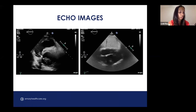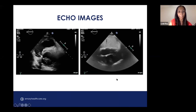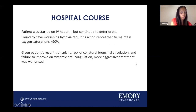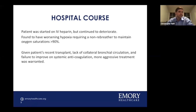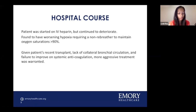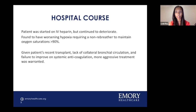He had a CTPA performed confirming an extensive pulmonary embolus burden within the bilateral distal PAs, extending into multiple lobar branches involving all lobes, and completely obstructive in the left lung. Echo done almost immediately showed an enlarged RV with decreased function. Weight-based heparin was initiated; however, the patient became increasingly hypoxic, requiring a non-rebreather to maintain oxygen saturation.